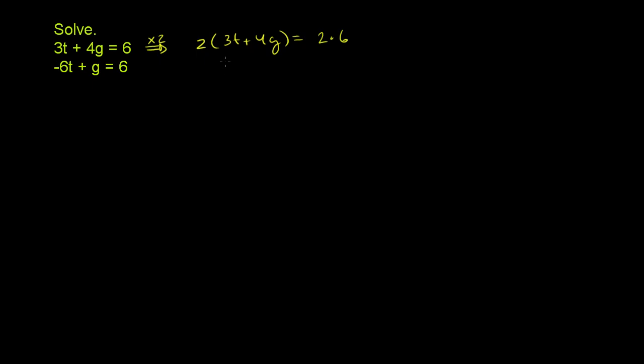So 2 times 3t is 6t plus 2 times 4g is 8g is equal to 2 times 6, which is 12. So I really just rewrote the same information, the same constraint in this first equation. I just multiplied both sides by 2.